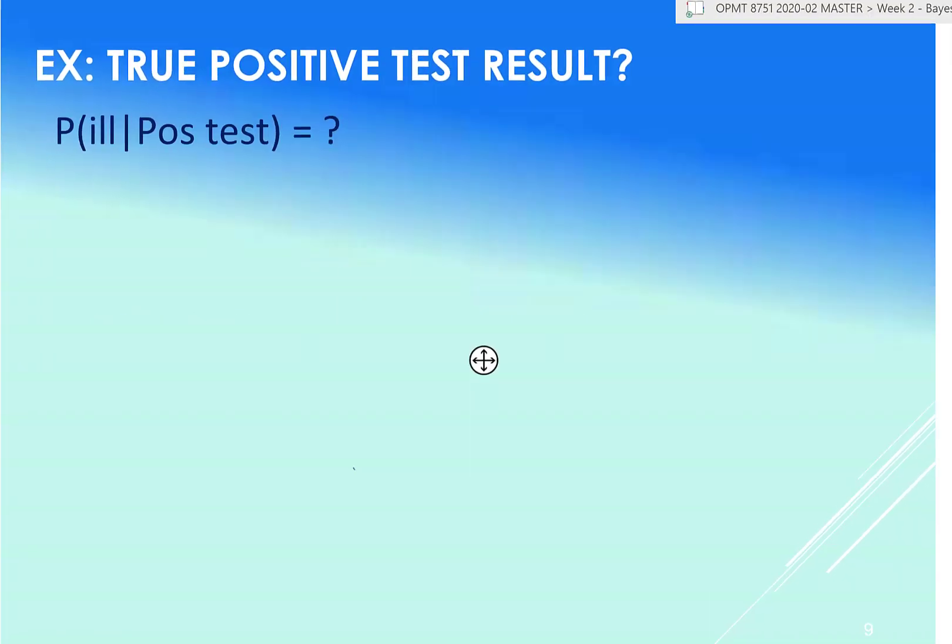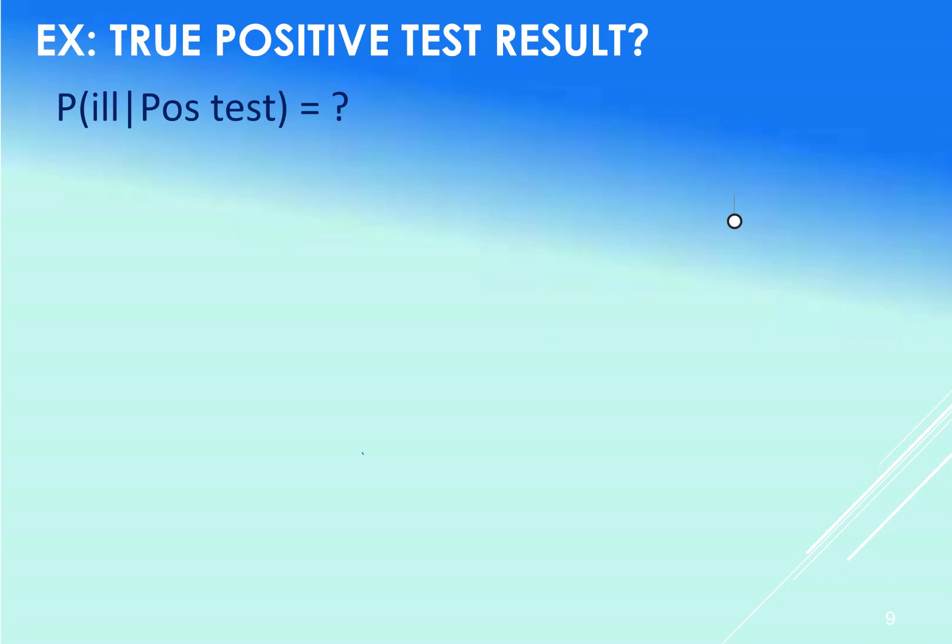Okay, so let's have a look here at our probabilities that result from Bayes rule. Okay, so very first one here, ill given positive test. Okay, so ill given positive test. Well, to get that what we actually do, we go back to our, basically our Bayes rule.